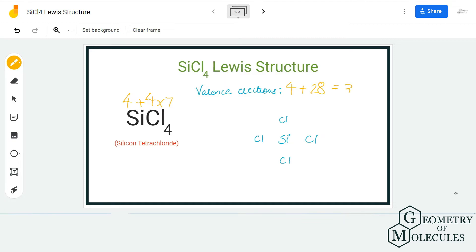Plus 4, 32 valence electrons for this molecule. Once you know the total number of valence electrons it becomes really easy.